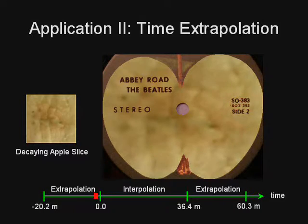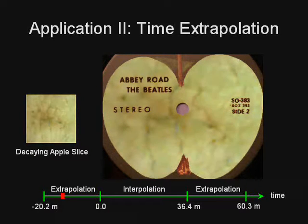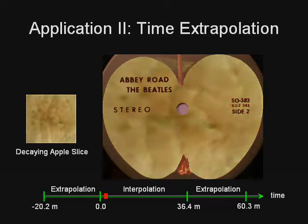Our STAF model allows us to extrapolate beyond the acquired data — in this case to see the greener appearance of the apple before the start of data acquisition.